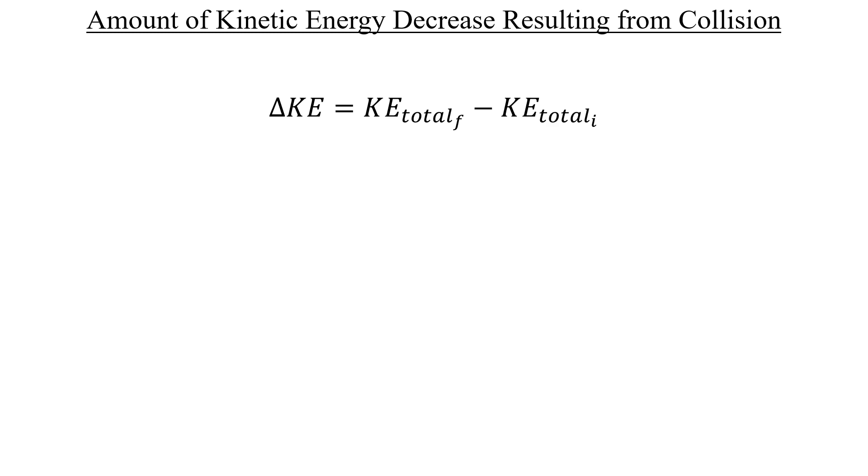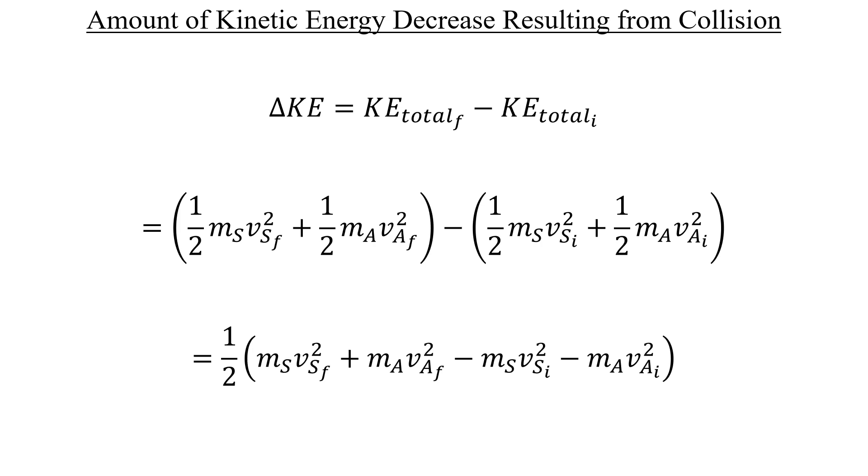I'll take the sum of Sam and Abigail's final kinetic energies, and subtract their initial ones. Let's start by factoring out one half from each term. We can also group up the terms that belong to Sam and Abigail specifically, the first and the third for Sam, and the second and the fourth for Abigail, and then factor out their masses, like this.